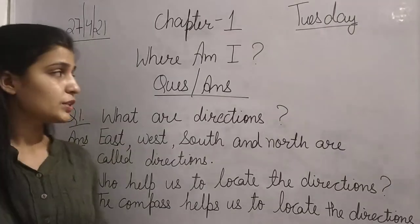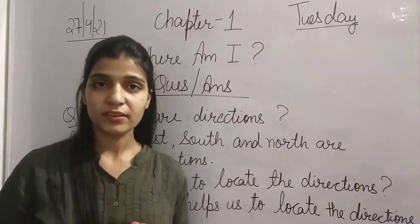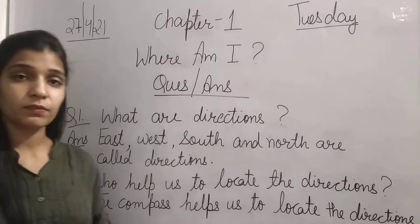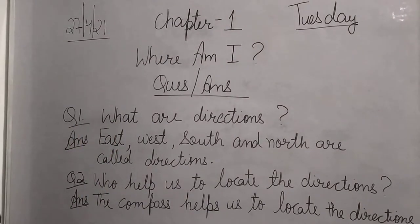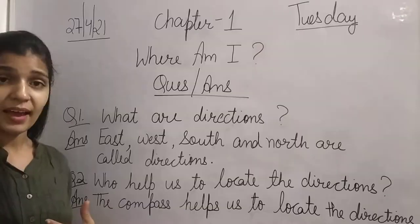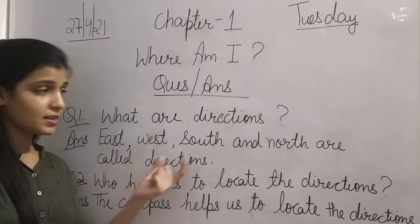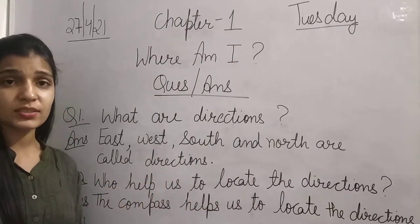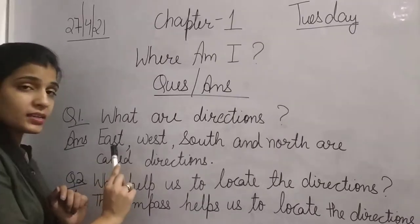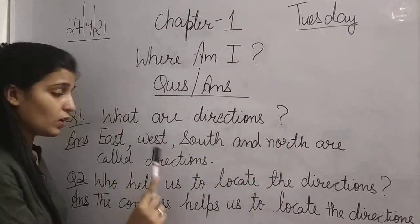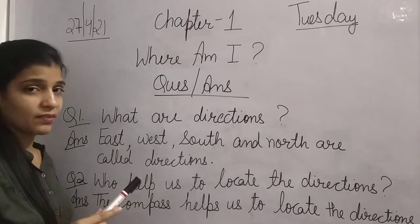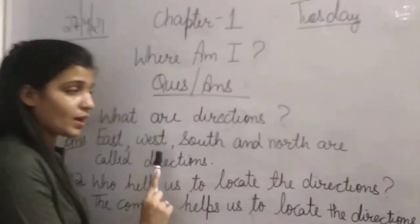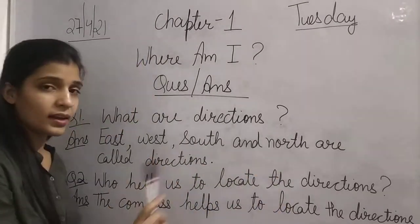After the difficult words we will do question answers. I hope you all have understood the meanings and spellings of difficult words. Now the question answers of this chapter. Question number 1: What are directions? East, West, South, and North are all directions. There are 4 directions. If the examiner or your teacher asks 'What are directions?' — East, West, South, and North are all directions.